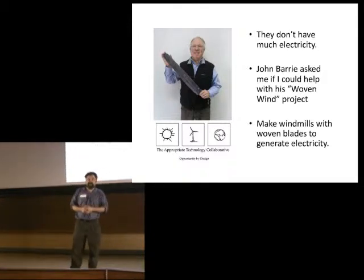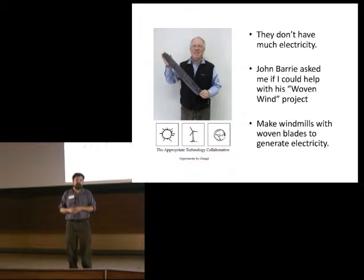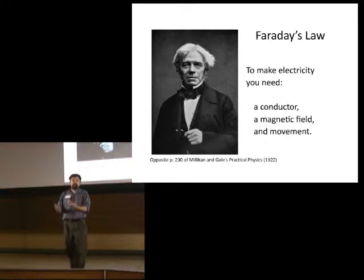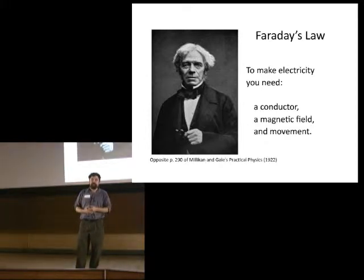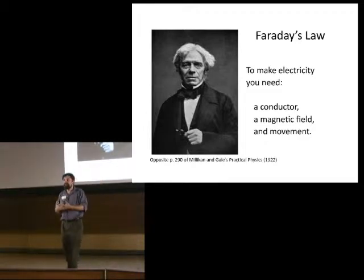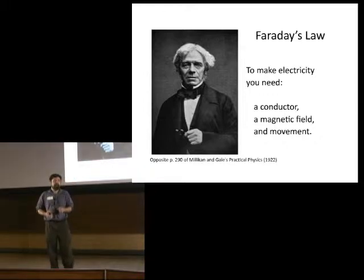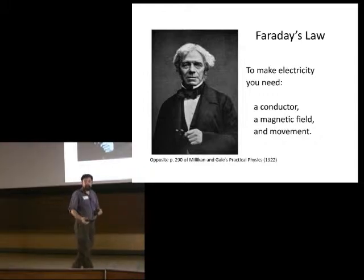A few years ago John asked me if I could help him with his woven wind project. In this project, women skilled weavers will make the windmill blades for an electric generator system. If you remember, Faraday told us that we need three things to make electricity: we need a conductor, preferably a coiled conductor, a magnetic field, and movement.